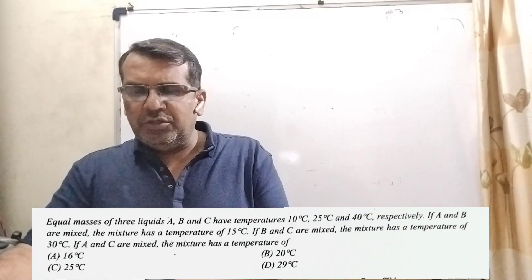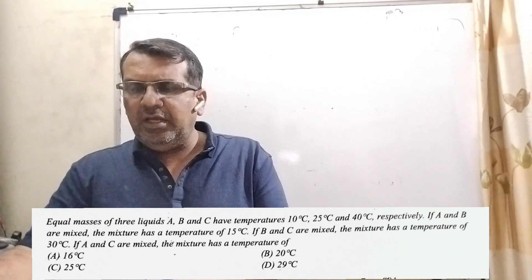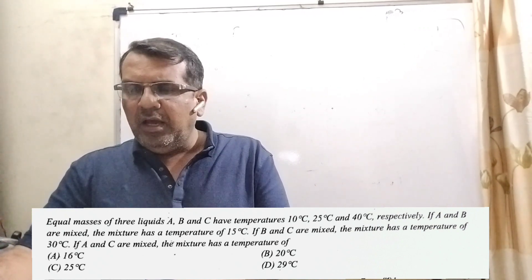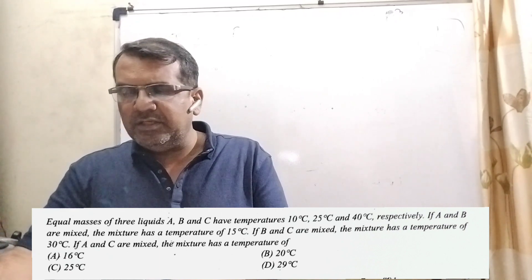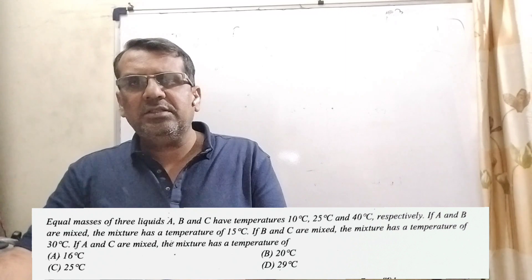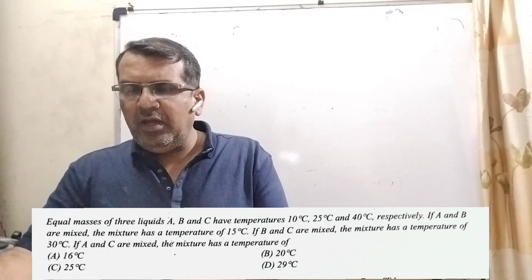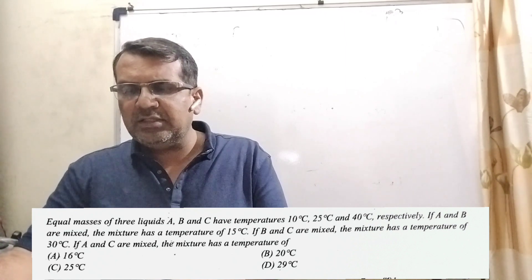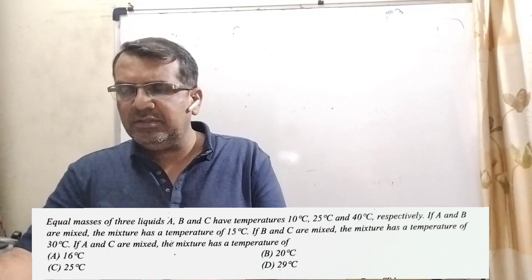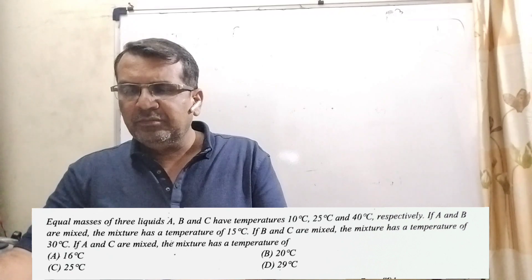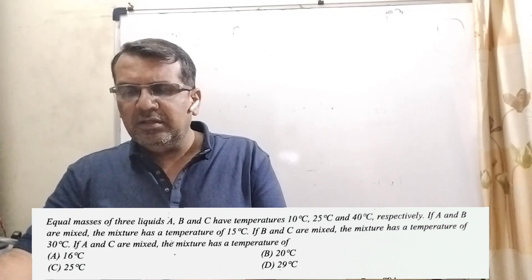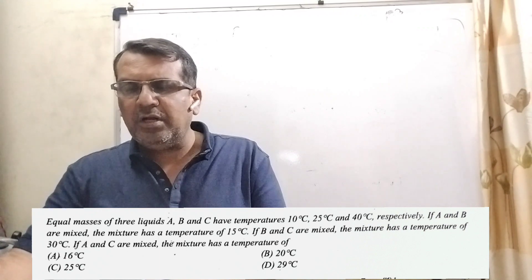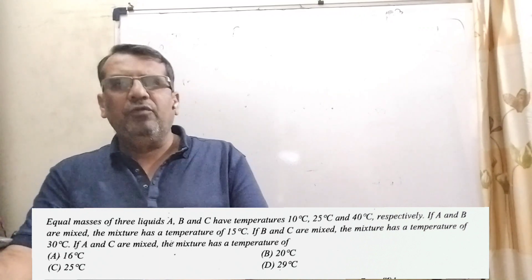Now here is the question. Equal masses of 3 liquids A, B and C have temperatures 10°C, 25°C and 40°C respectively. If A and B are mixed, the mixture has a temperature of 15°C. If B and C are mixed, the mixture has a temperature of 30°C. If A and C are mixed, the mixture has a temperature of — here we have given 4 options.